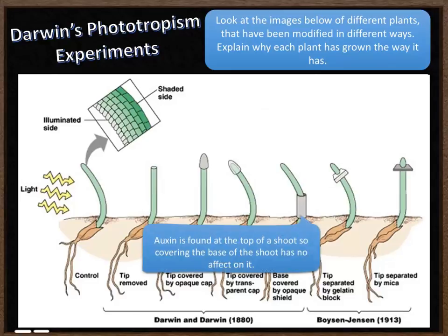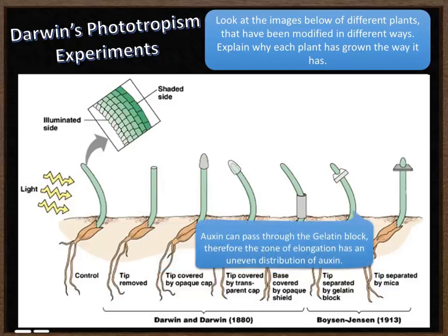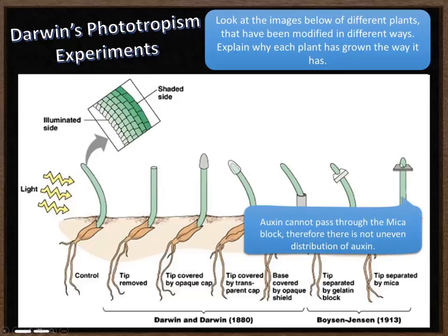The next plant has its base covered by an opaque cap. The auxin is found at the top of the shoot and is affected nearer the top — that's where elongation occurs. So covering the base has had no effect on how it grows, and it has grown towards the sunlight as we would expect. The second to last one has the tip separated by a gelatin block, and auxin can pass through that gelatin block. Therefore the zone of elongation does have an uneven distribution of auxin because of the light from the sun, and it has grown towards the source of light. This last one has the tip separated by mica, and auxin cannot pass through mica. Therefore there isn't an uneven distribution of auxin throughout the plant, so it has just grown straight upwards.